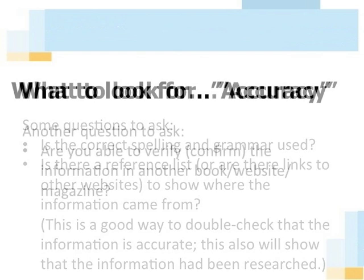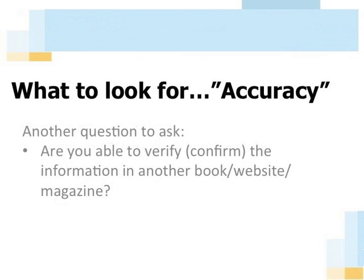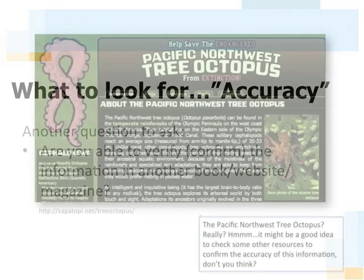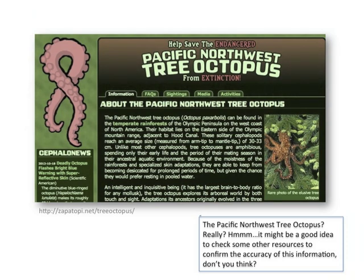Another question to ask is whether or not you are able to verify or confirm the information in another book or website or magazine. For example, this website — the Pacific Northwest Tree Octopus? Really? Hmm. Might be a good idea to check some other resources to confirm the accuracy of this information. Don't you think?